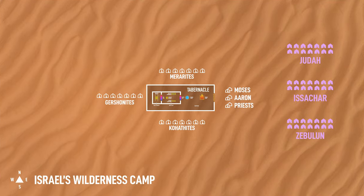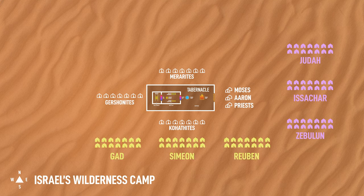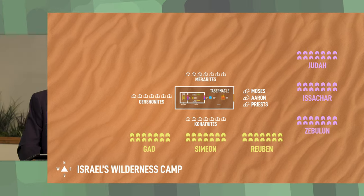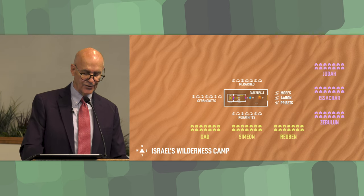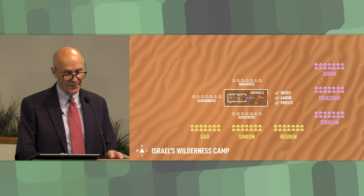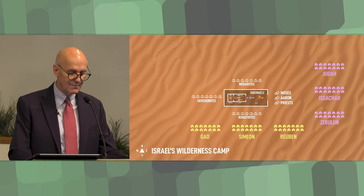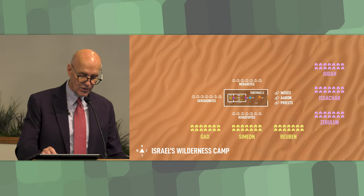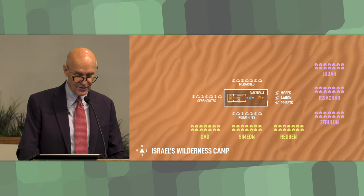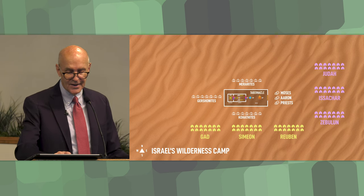After the eastern grouping, there was the southern grouping. The tribal camps of Reuben, Simeon, and Gad were placed together on the southern side of the tabernacle and were collectively under Reuben's banner. Reuben, born through Leah, was the oldest son of all of Jacob's children, with Simeon being the second oldest. Gad was born from Jacob and Leah's handmaid, Zilpah. Altogether they totaled 151,450 fighting men.